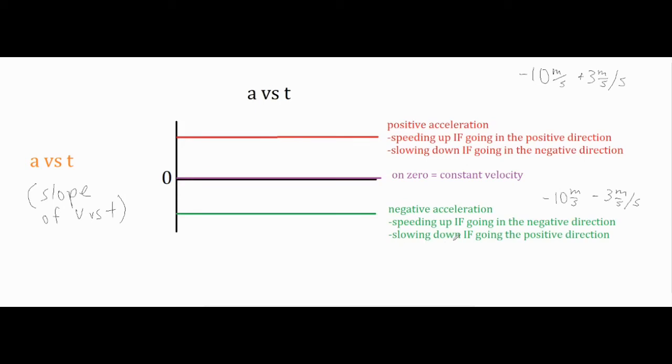It can also be slowing down if you are going in the positive direction. If you're going in the positive direction and you're adding a negative number, you're just decreasing that positive number. So it could mean speeding up or slowing down with a positive acceleration or a negative acceleration. You really have to be careful in analyzing which direction you're going in initially and what effect it's going to have on that velocity.